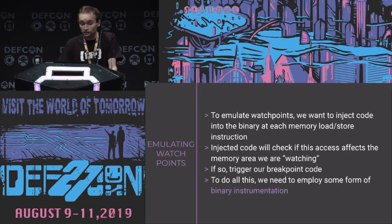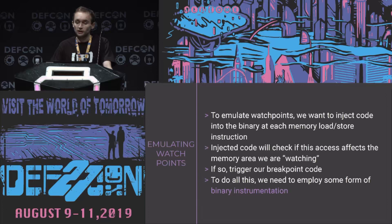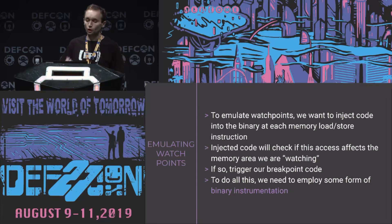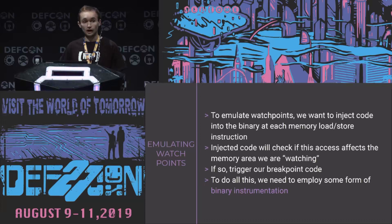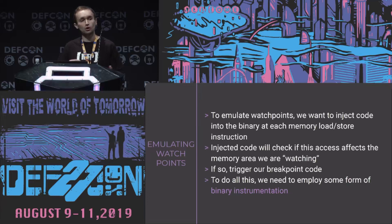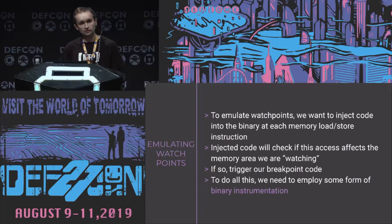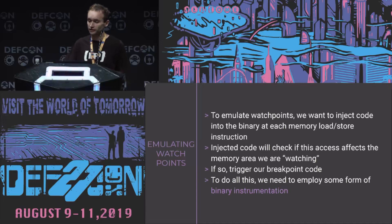So I started thinking: if I wanted to do this in a way that wasn't stupid, what would that look like? From a high-level perspective, what I came up with was: if we want to emulate the behavior of watchpoints, we want to inject code into the binary at every single memory load or memory store instruction. That code is going to check if that access is affecting a memory area we're watching — our watchpoint address. And if it does, we want it to call a breakpoint, call our code to alert us that this change was made, maybe give us a stack trace.